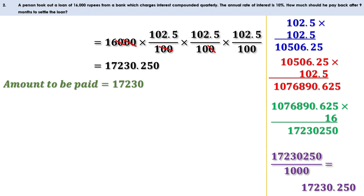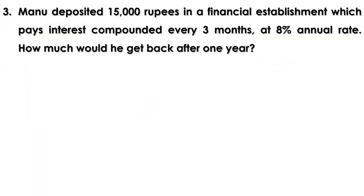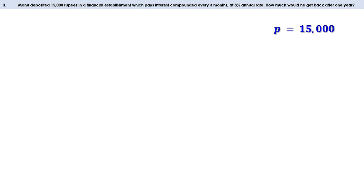Now let us do the remaining problems on page 94. Manu deposited 15,000 rupees in a financial establishment which pays interest compounded every three months at an 8% annual rate. How much would he get back after one year? Manu deposited 15,000 rupees, so P is 15,000. The interest is compounded quarterly, therefore R is equal to 8 divided by 4, or 2. We need the amount after one year — that means after four quarter years — so N is equal to 4.